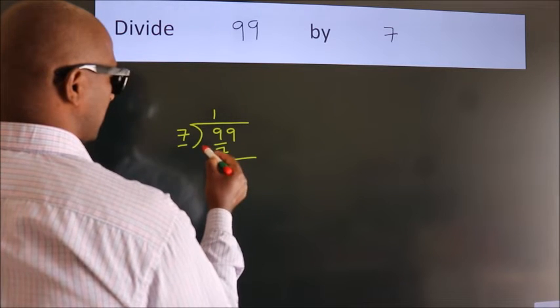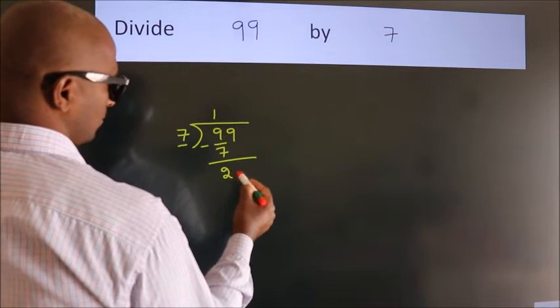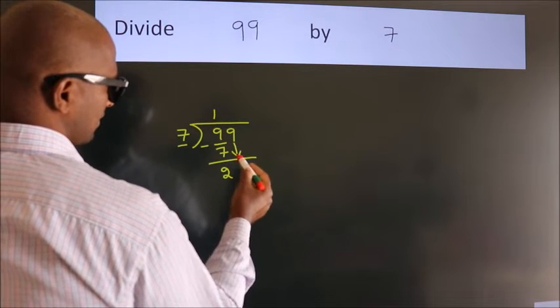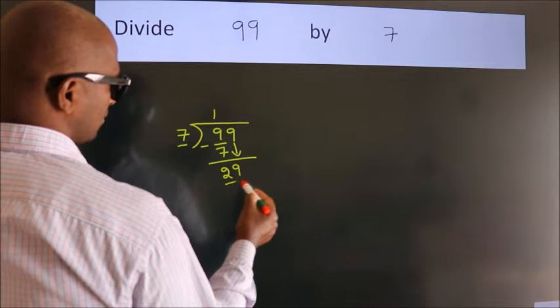Now we subtract and get 2. After this, bring down the next number, so 9 down. So we have 29.